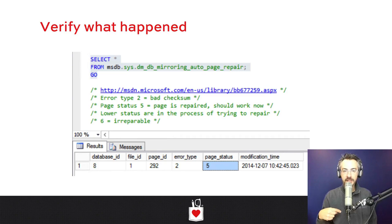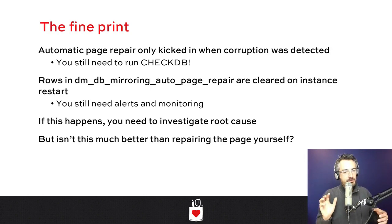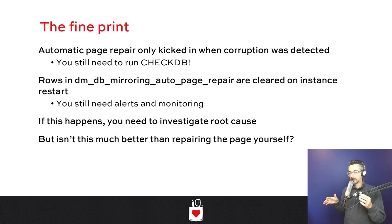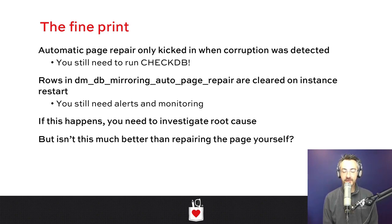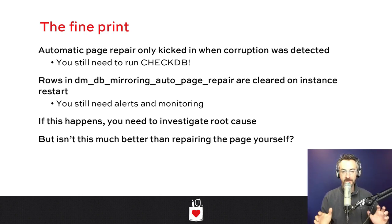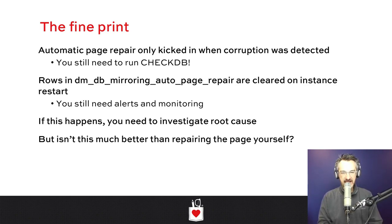SQL Server tracks automatic page repairs in sys.dm_db_mirroring_auto_page_repair — a system table in MSDB listing the most recent ~500 corrupt pages repaired automatically. There's an equivalent view for Always On Availability Groups. In a perfect world you'd alert whenever rows appear in there, and we do in sp_Blitz — our totally free open-source health check utility. Just because corruption was automatically repaired doesn't mean you're home free: your storage is still corrupting itself. Get any third-party monitoring tool to alert on these events and start planning your failover, because whenever you see auto page repair activity, you need to get off that storage as fast as possible.